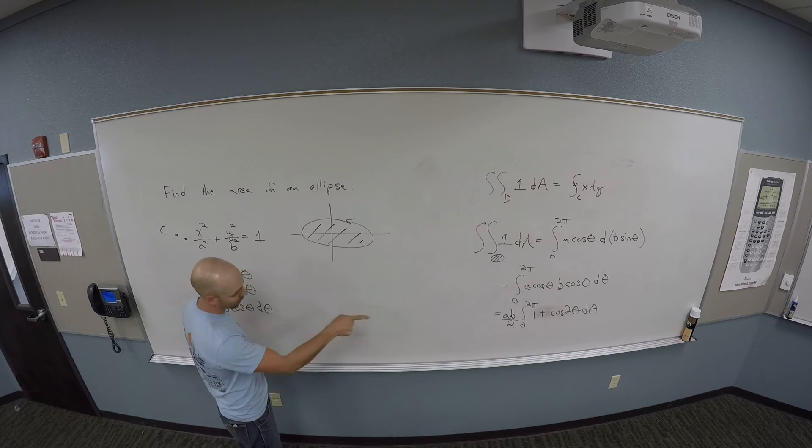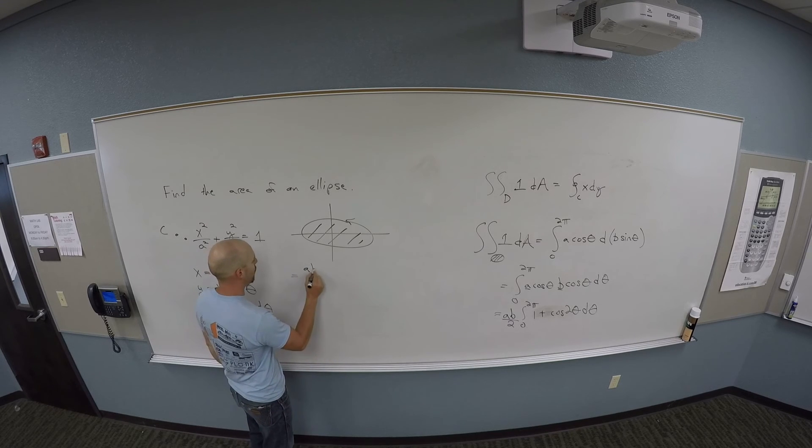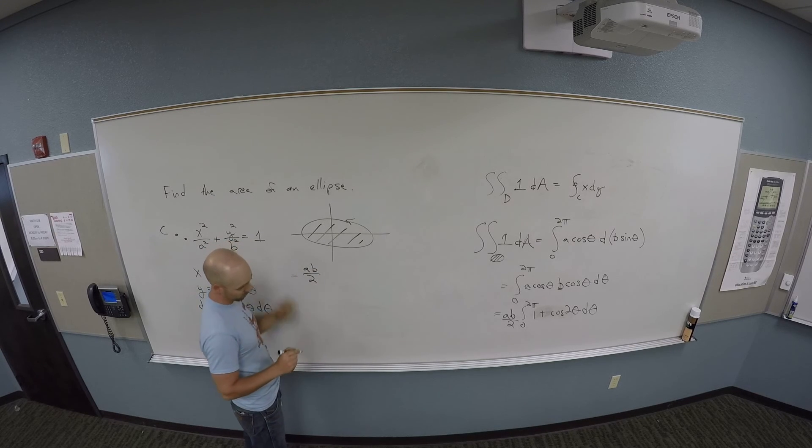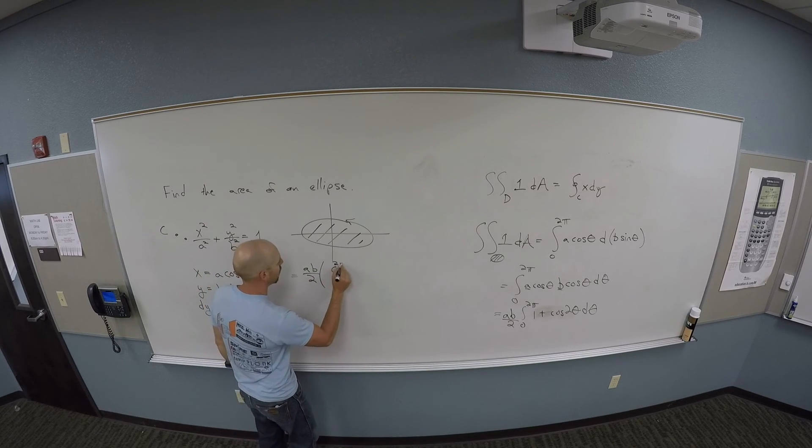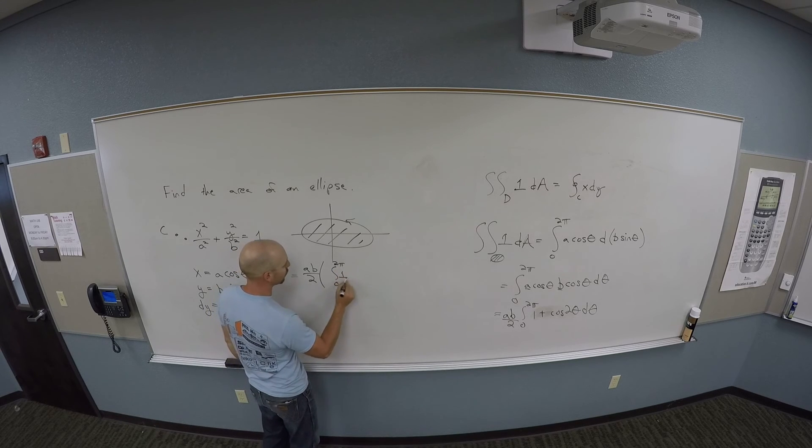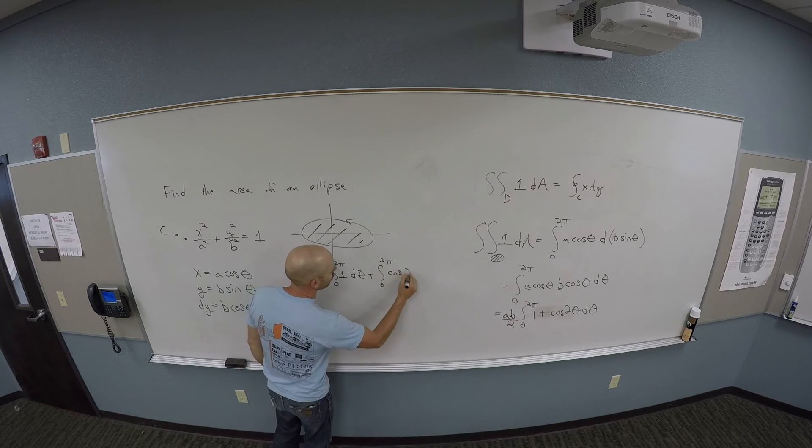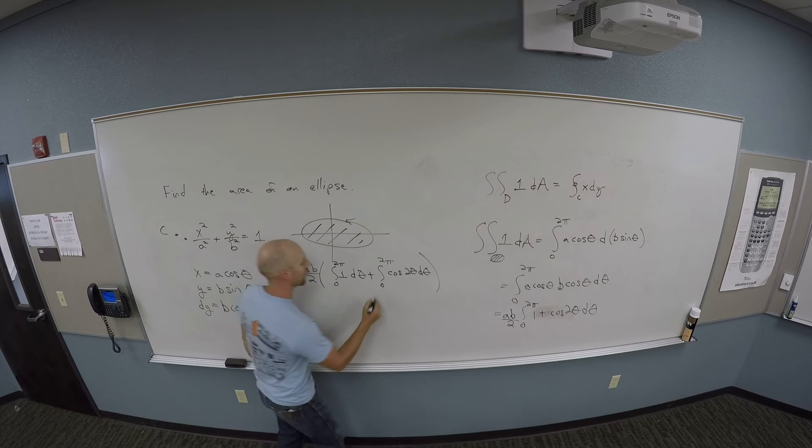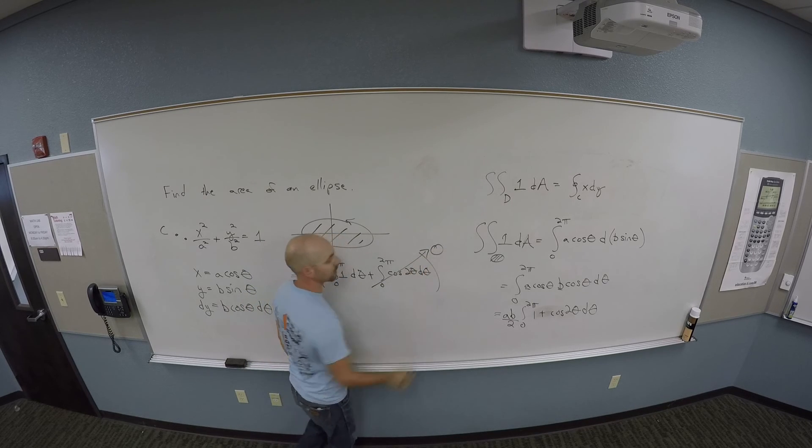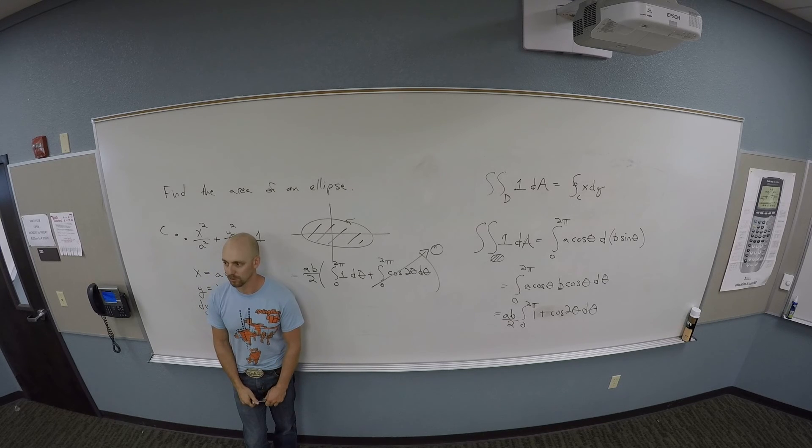So then, I've got a b over two, from zero to two pi, one d theta plus zero to two pi cosine two theta d theta. And the cosine becomes zero. So I've got integral from zero to two pi of one d theta plus the integral from zero to two pi of cosine two theta d theta, which the cosine becomes zero.